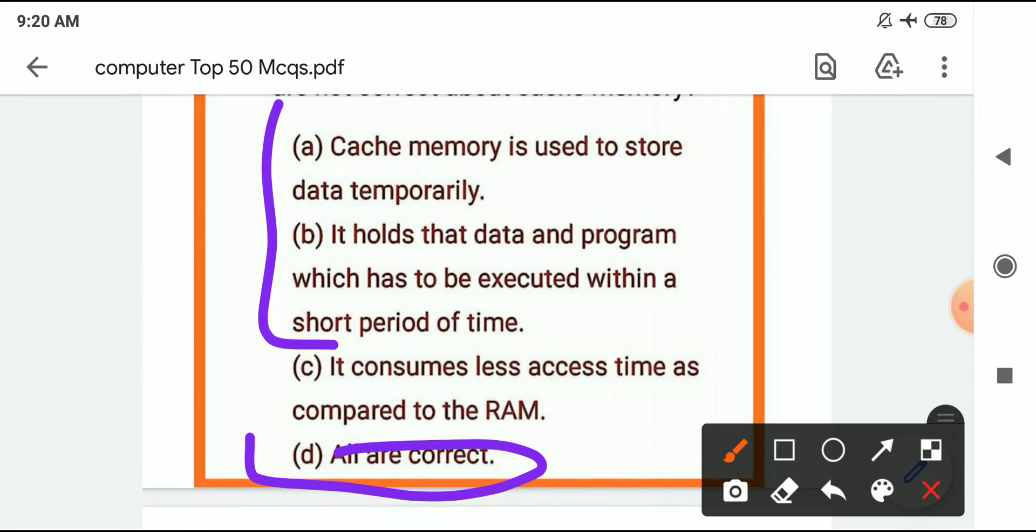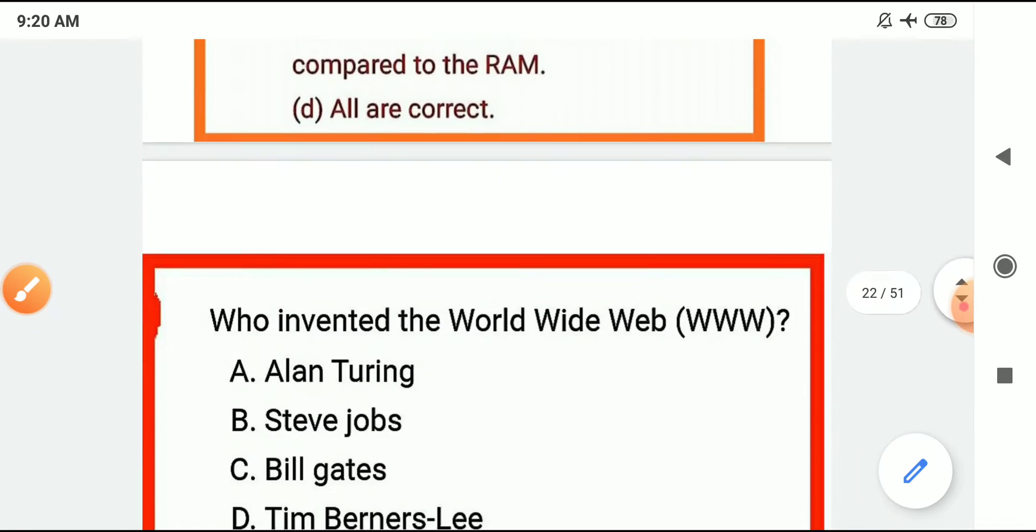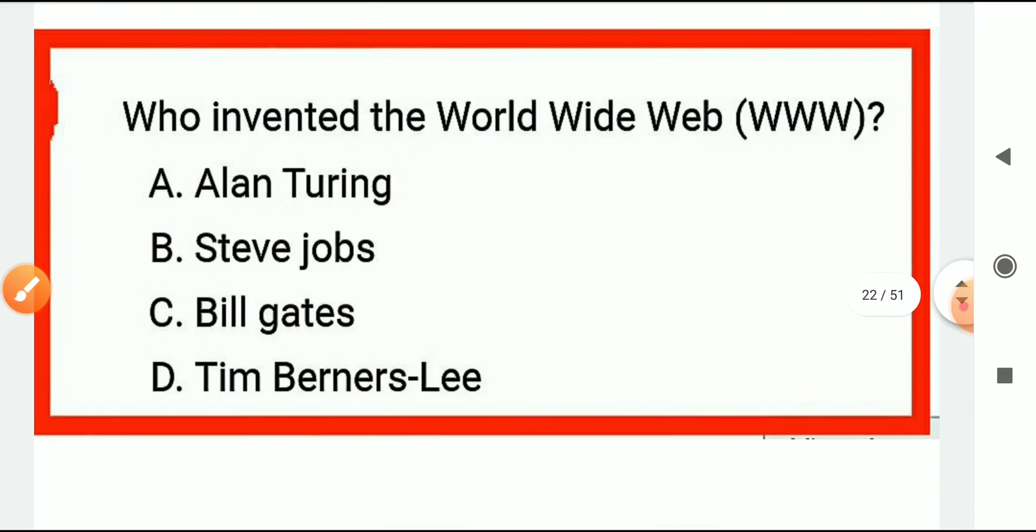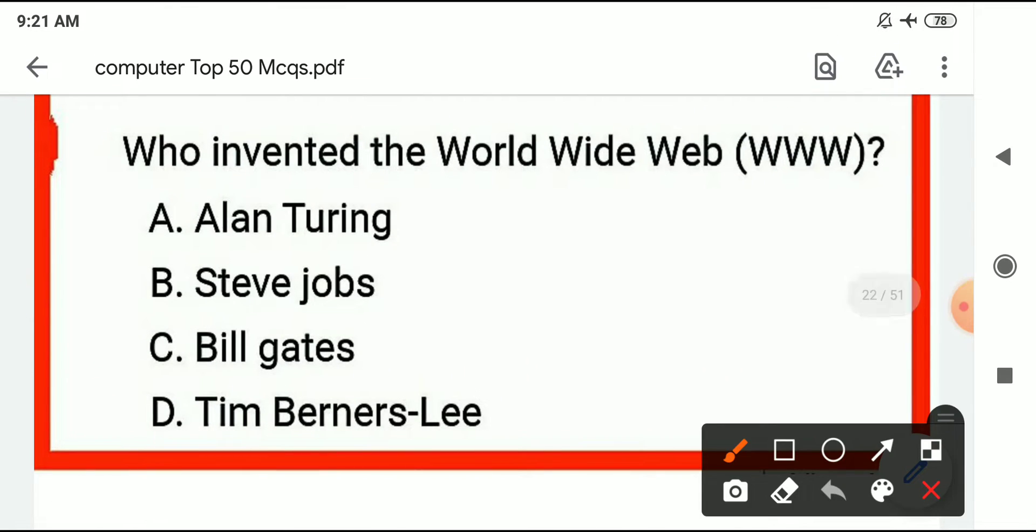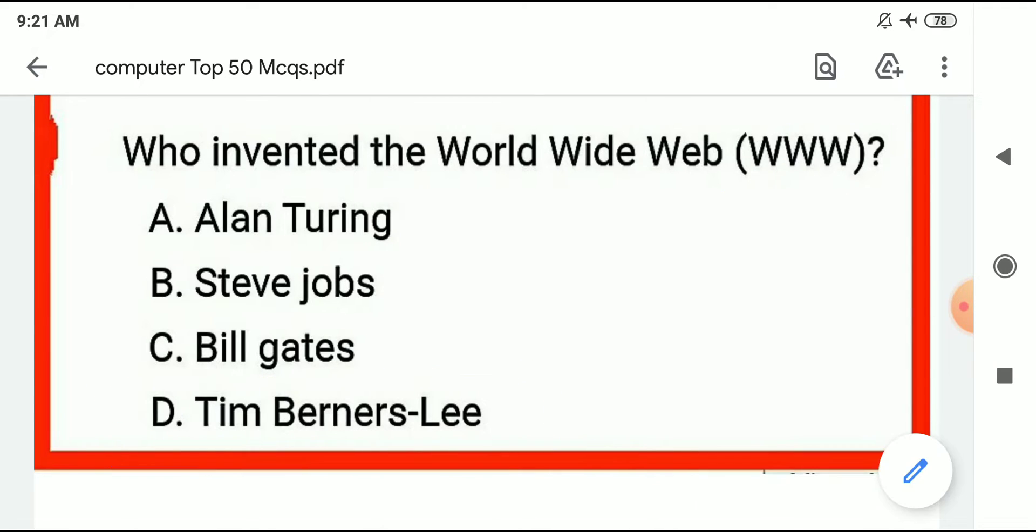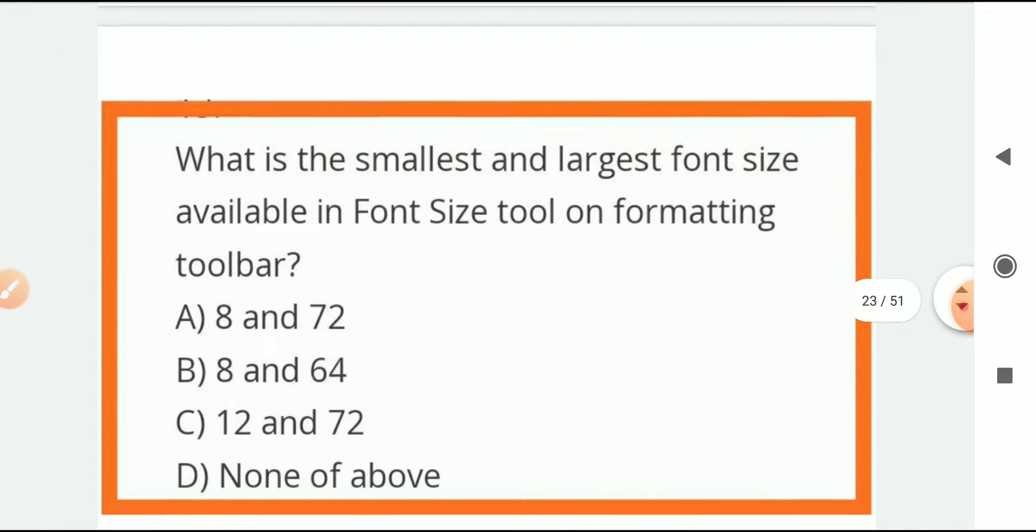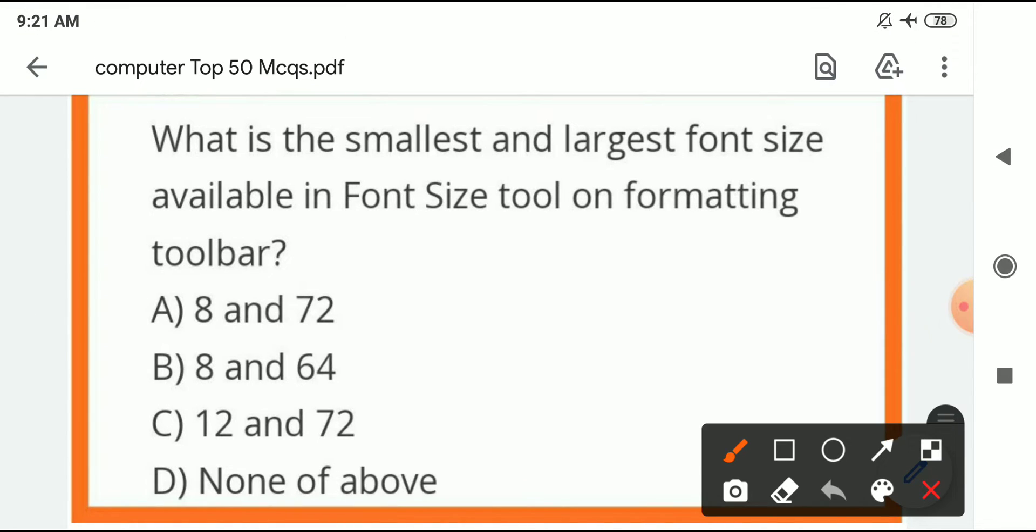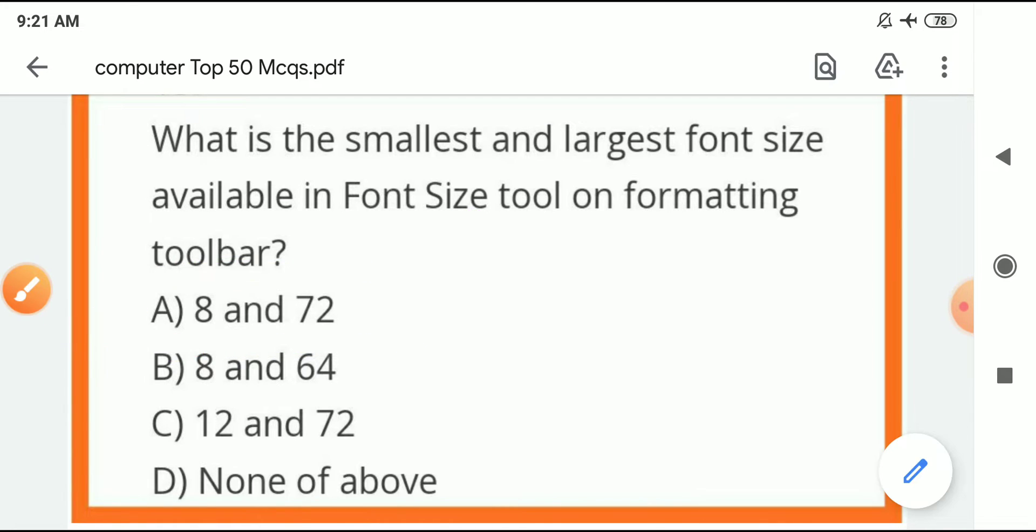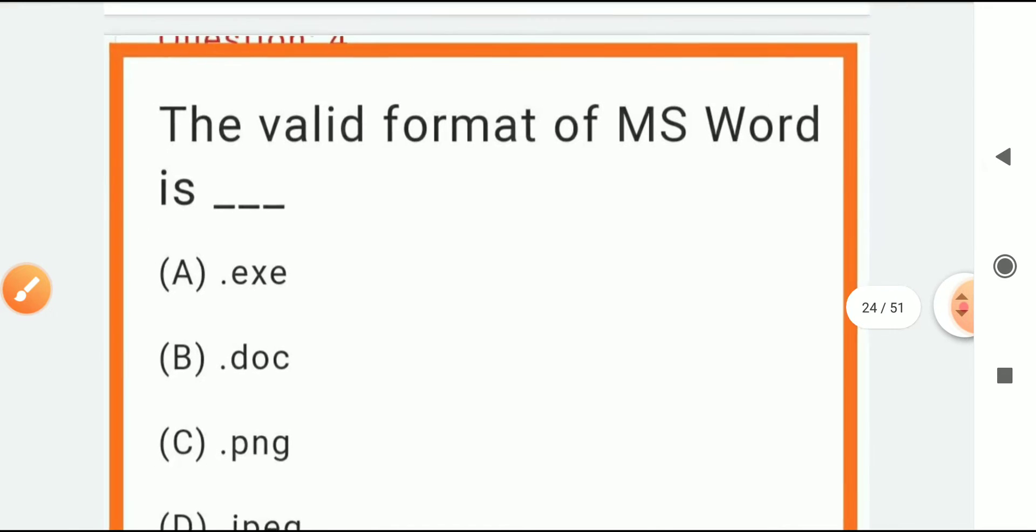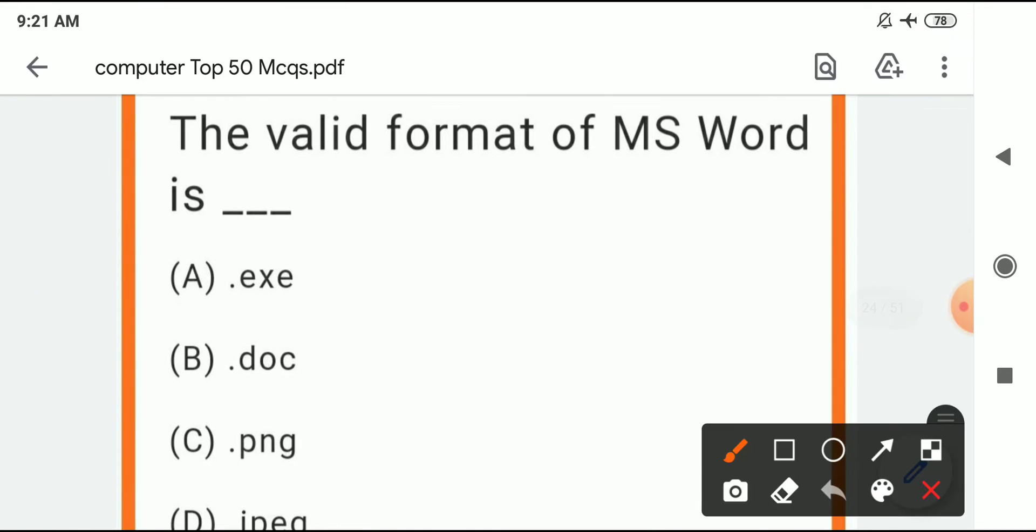The next is who invented the World Wide Web? Tim Berners-Lee invented World Wide Web. What is the smallest and largest font size available in font size tool by MS Word? Smallest is 8 and largest is 72. This is an important question. The valid format of MS Word is - MS Word file extension is .doc.